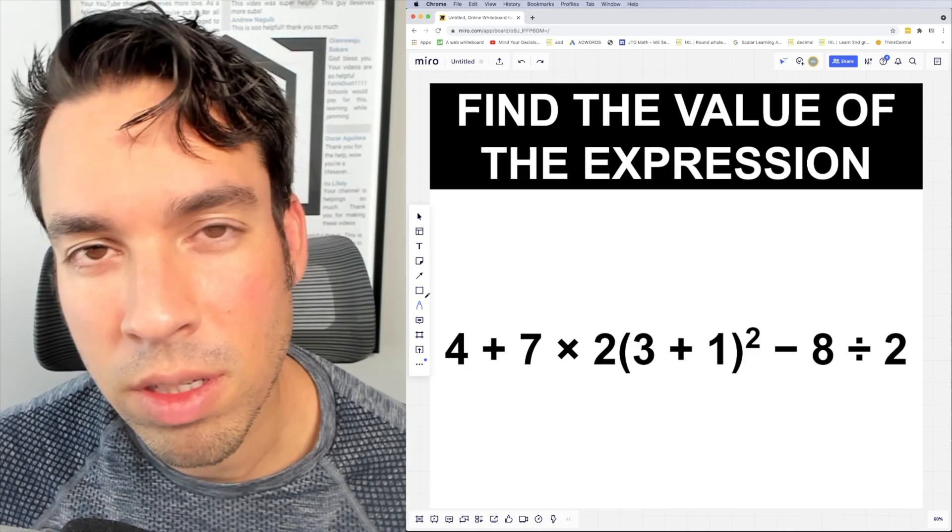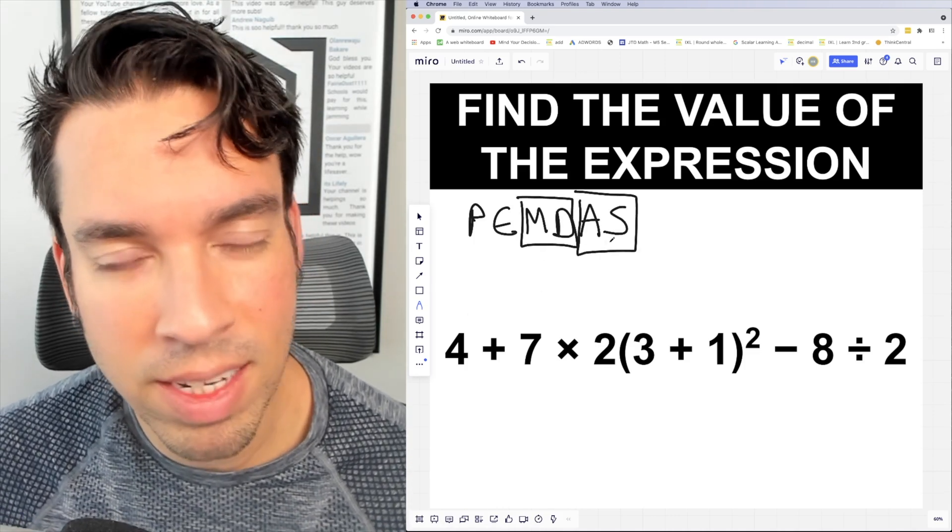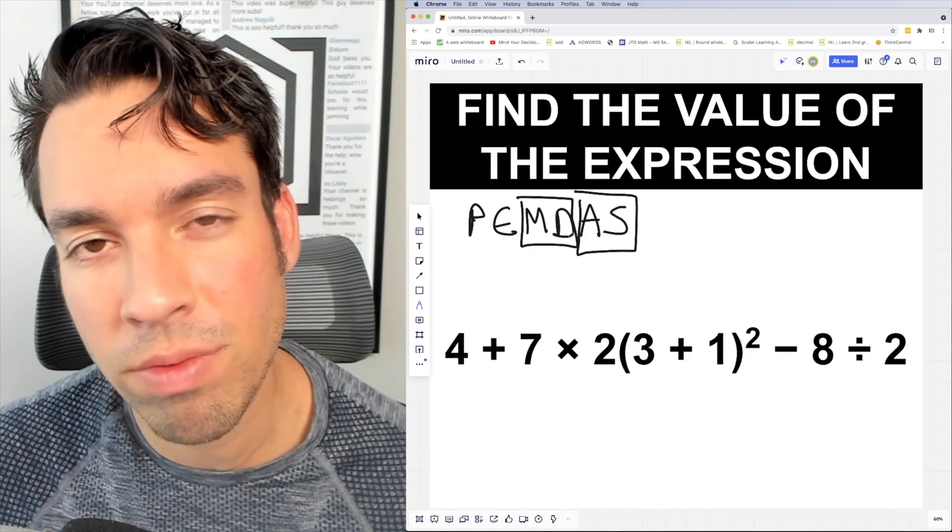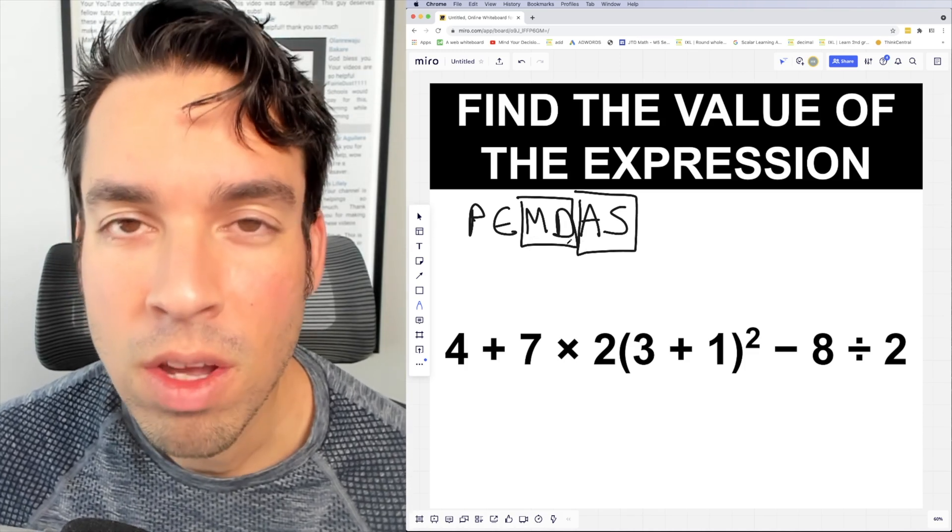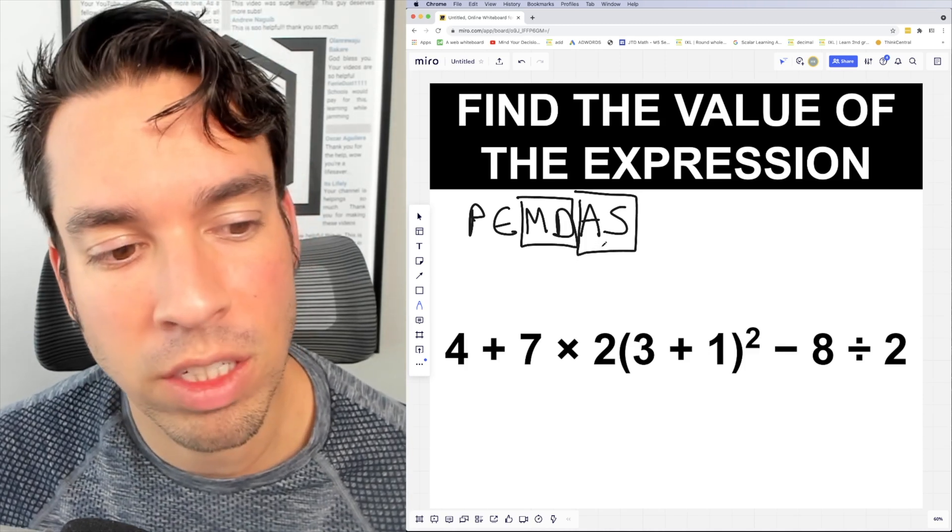So what I want to do first is I want to write out PEMDAS. Now the reason why I put boxes around MD and AS is because multiplication and division are actually on the same level. So when we're deciding between those two, you actually go left to right.